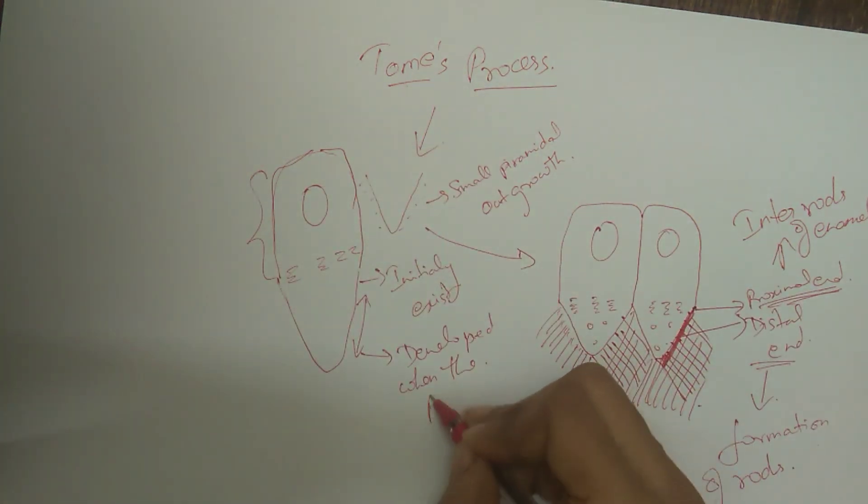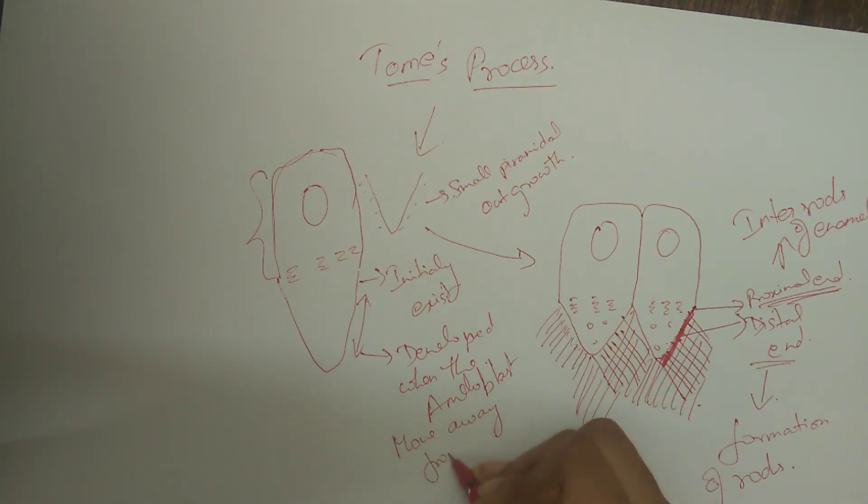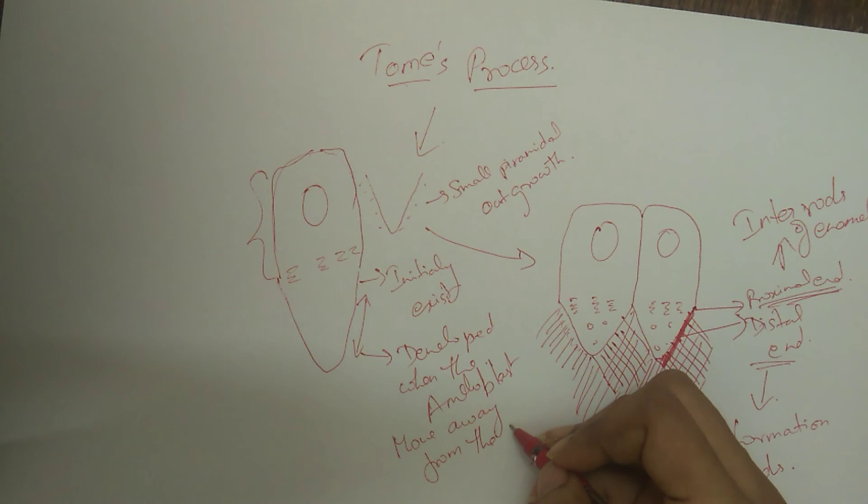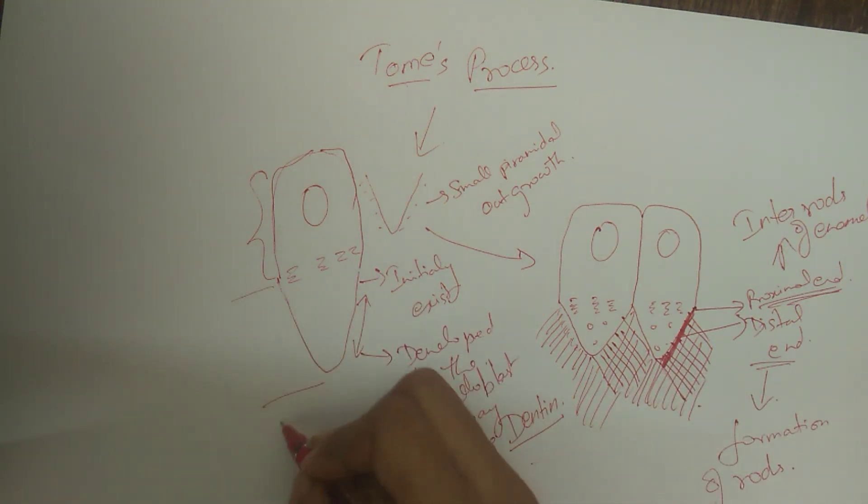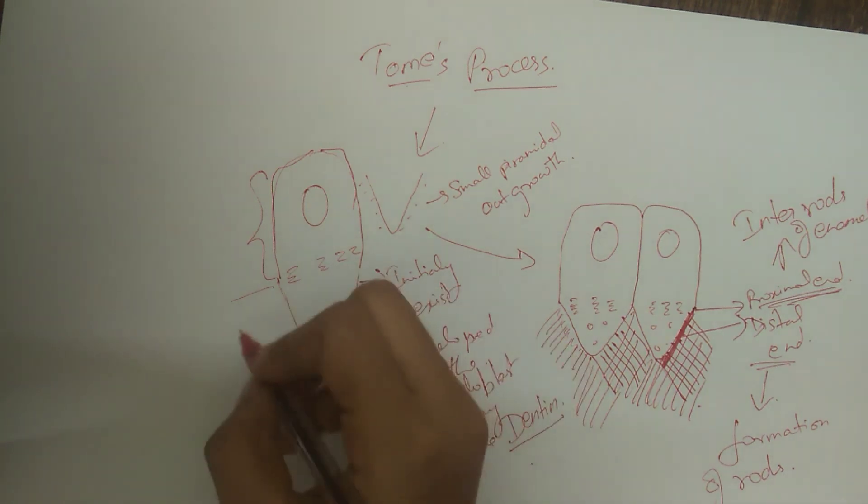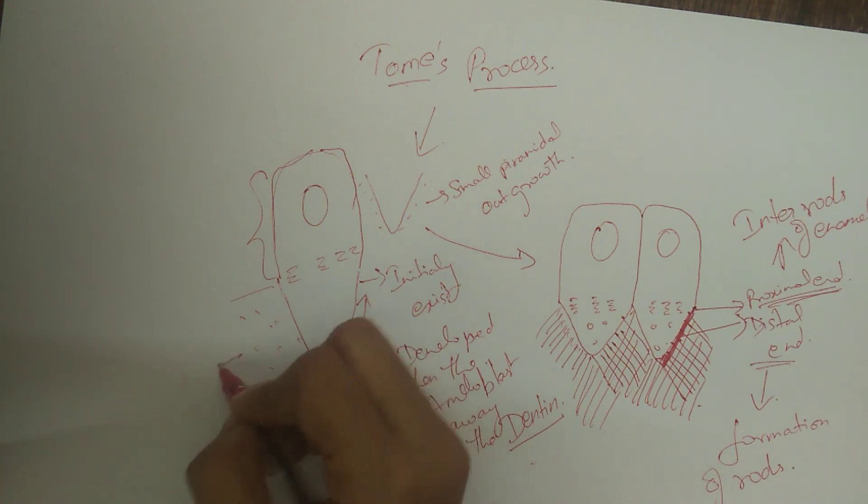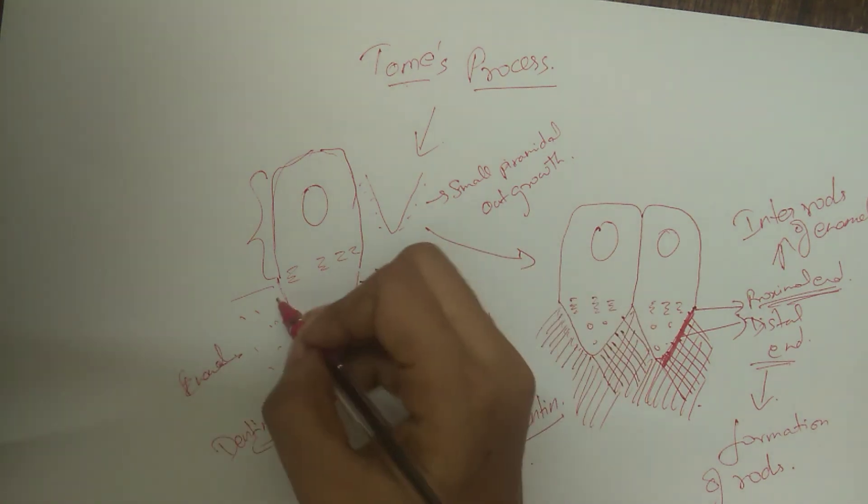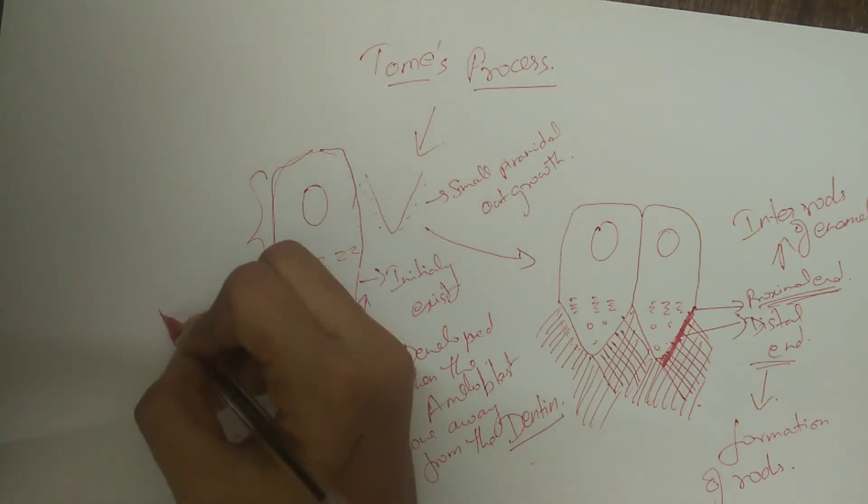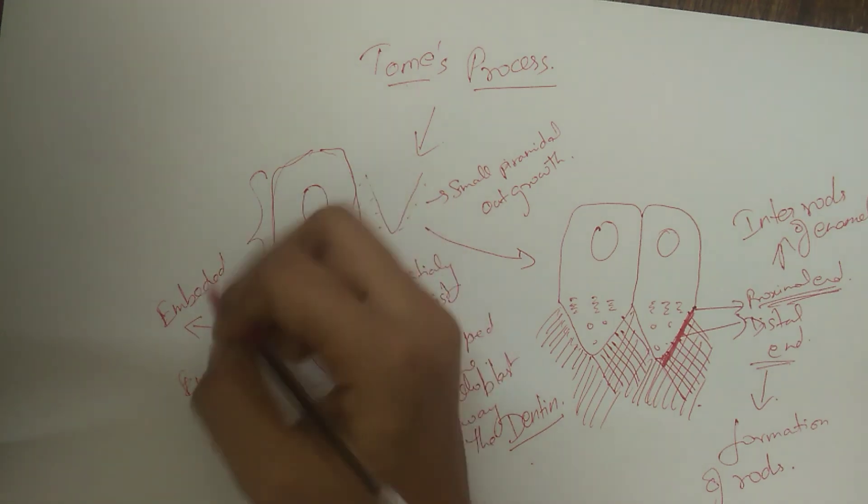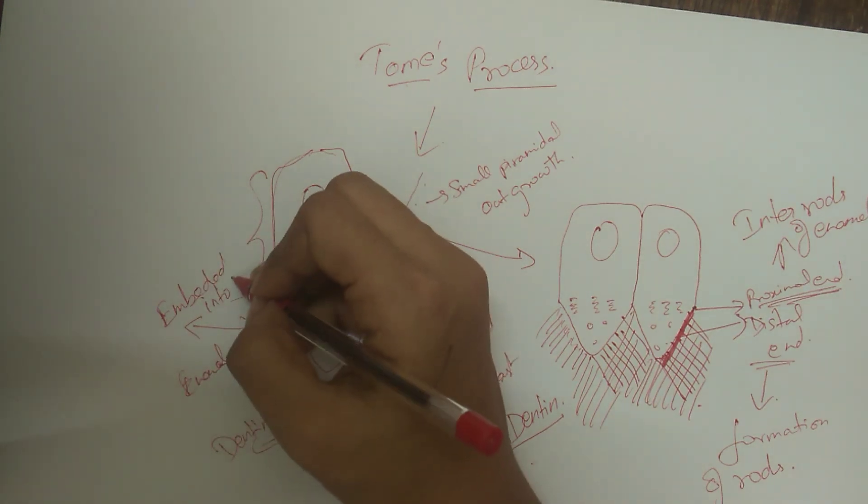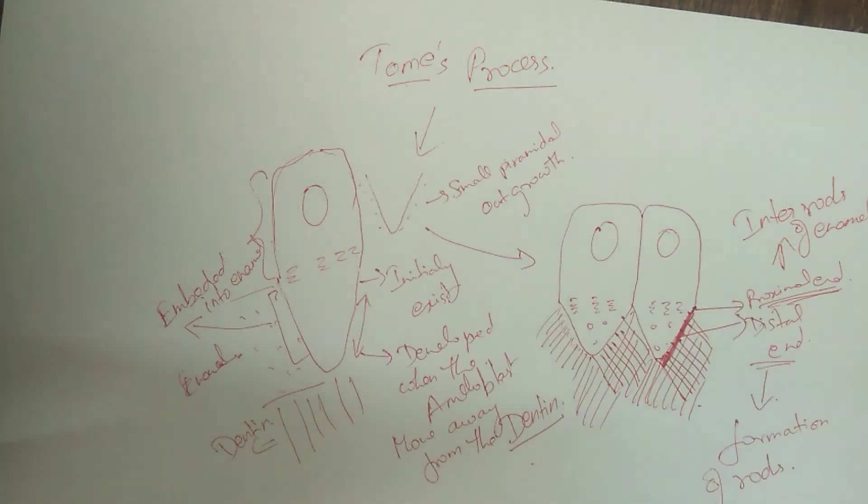A roughly hexagonal ameloblast forming a keyhole-shaped enamel rod can be explained by the fact that the bulk of the head of the enamel rod is formed by one ameloblast and the tail of the rod is formed by three other ameloblasts. Thus, it could be understood that each enamel rod is formed by four ameloblasts and each ameloblast contributes to four different enamel rods.